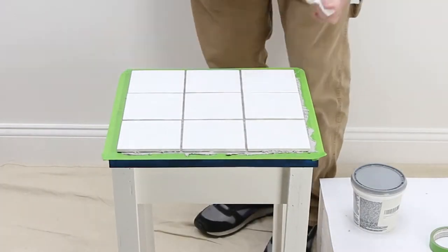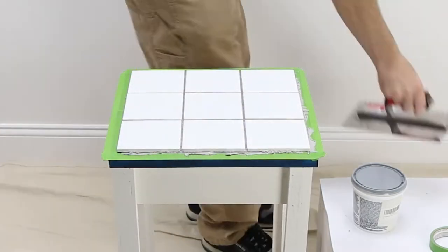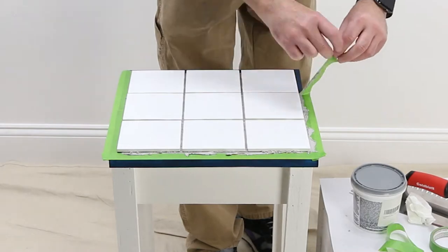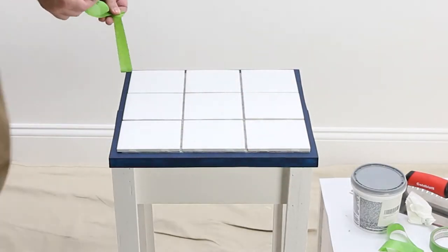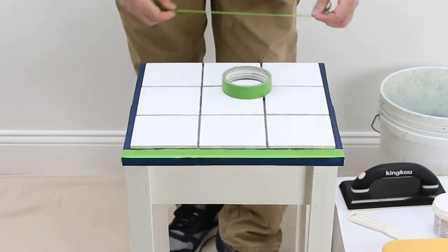Trim the mortar around the edge and remove the tape. After the mortar has set overnight, place new tape around the edge.